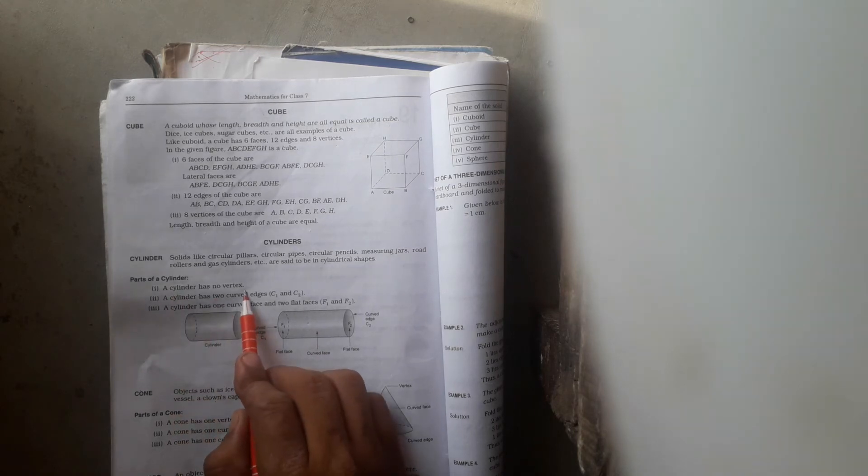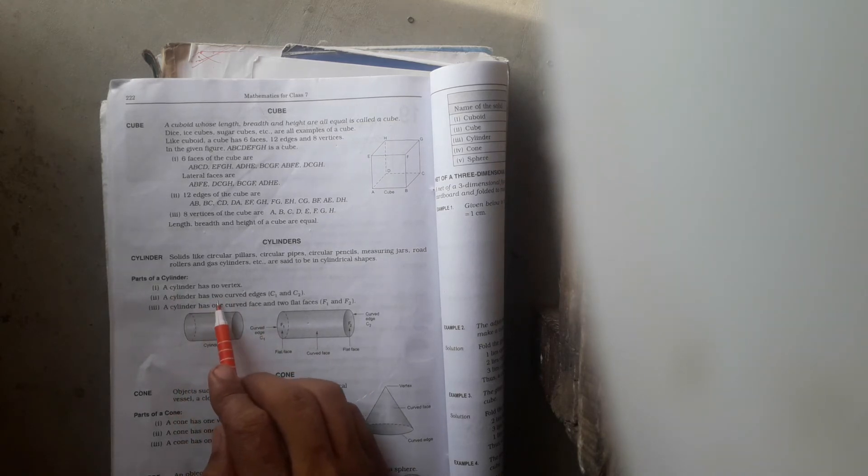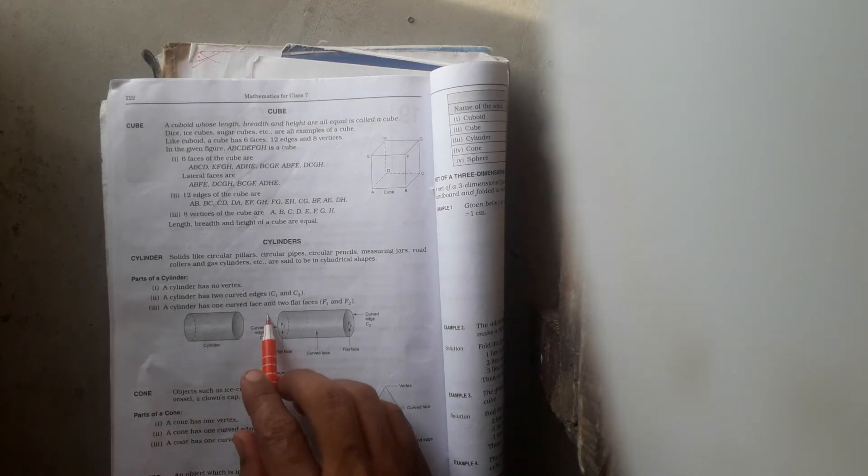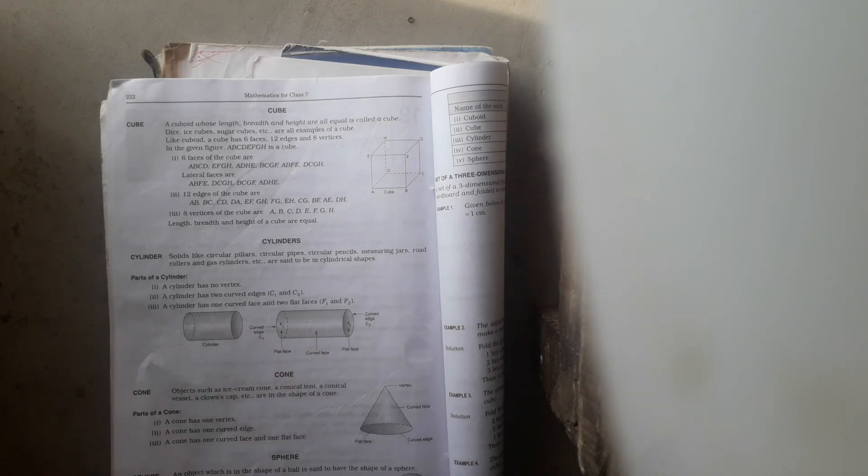And this is the figure of cylinder. A cylinder has no vertex. A cylinder has two curved edges. A cylinder has one curved surface and two flat faces.